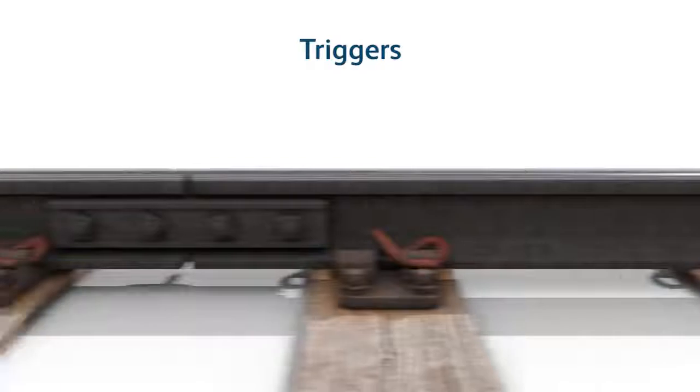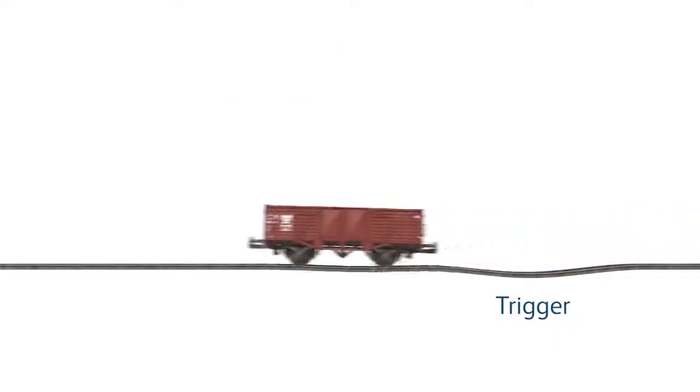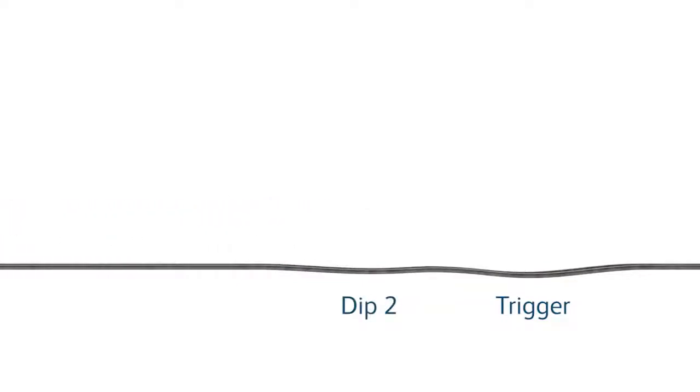The trigger for cyclic top could be a dipped joint, IRJ, adjustment switch, S&C or wetbeds. As the vehicle travels over the dip, the vehicle rises and drops further along the track, which starts to compress the track ballast at that location, initiating the development of a new dip.